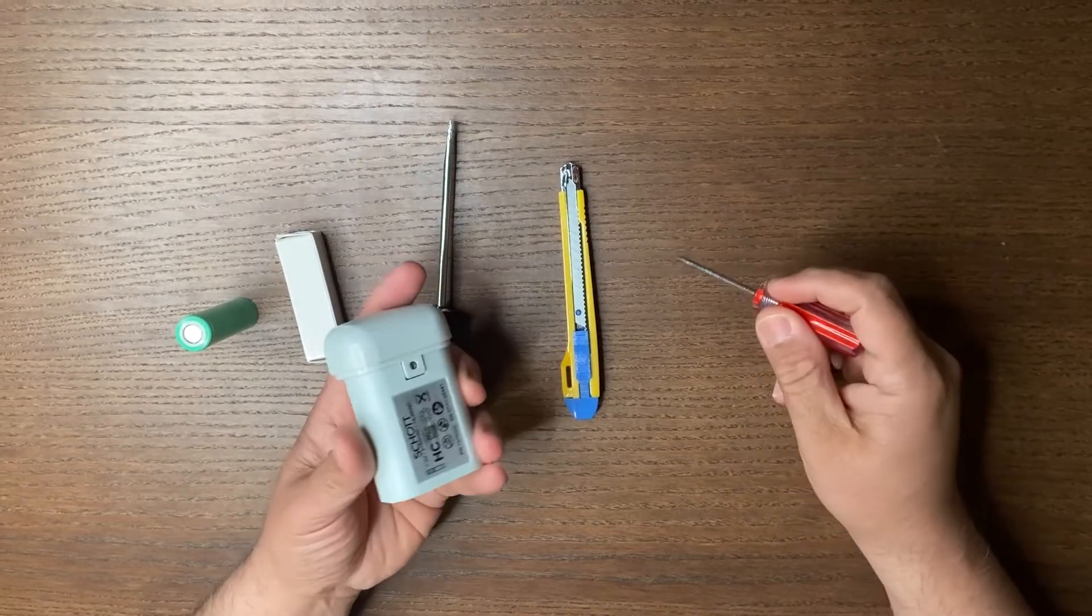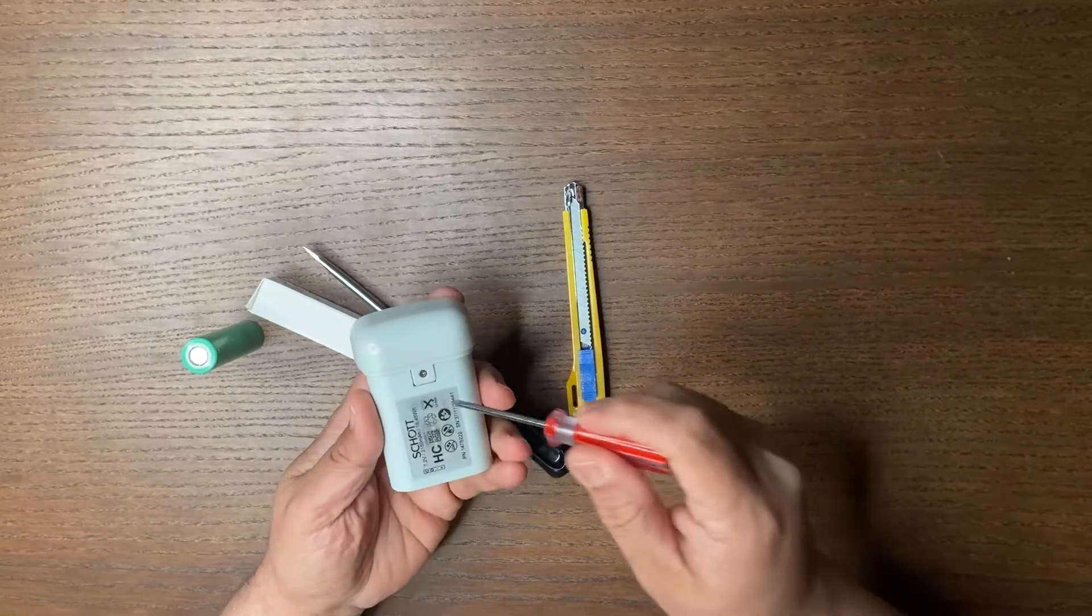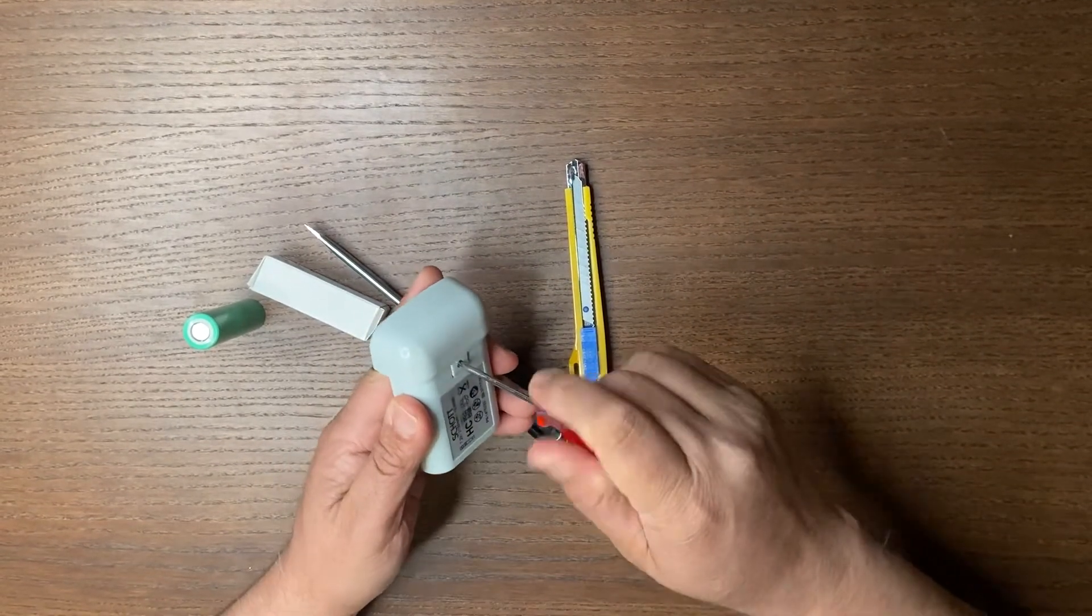This video shows how we can change the battery for Zeiss Loop. In Zeiss Loop, usually the battery comes with two screws.